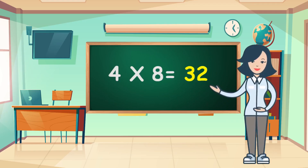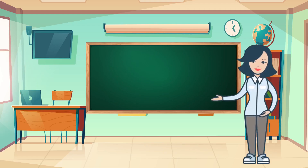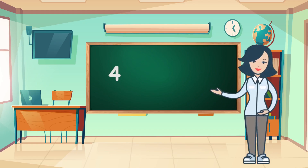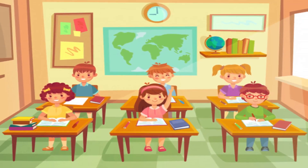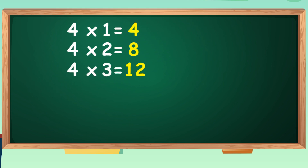Four eights are thirty-two. Four nines are thirty-six. Four tens are forty. Four ones are four. Four twos are eight. Four twos are eight. Four threes are twelve. Four fours are sixteen.